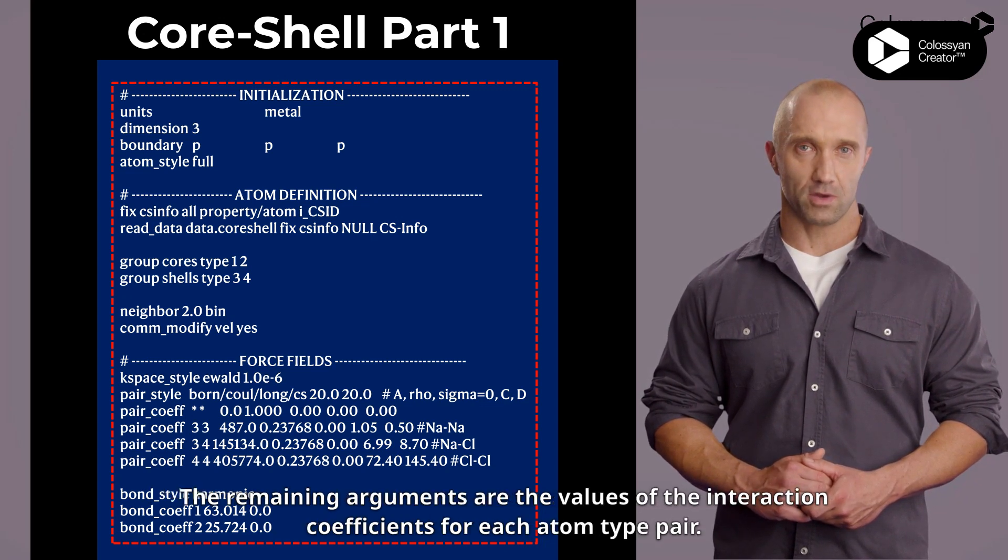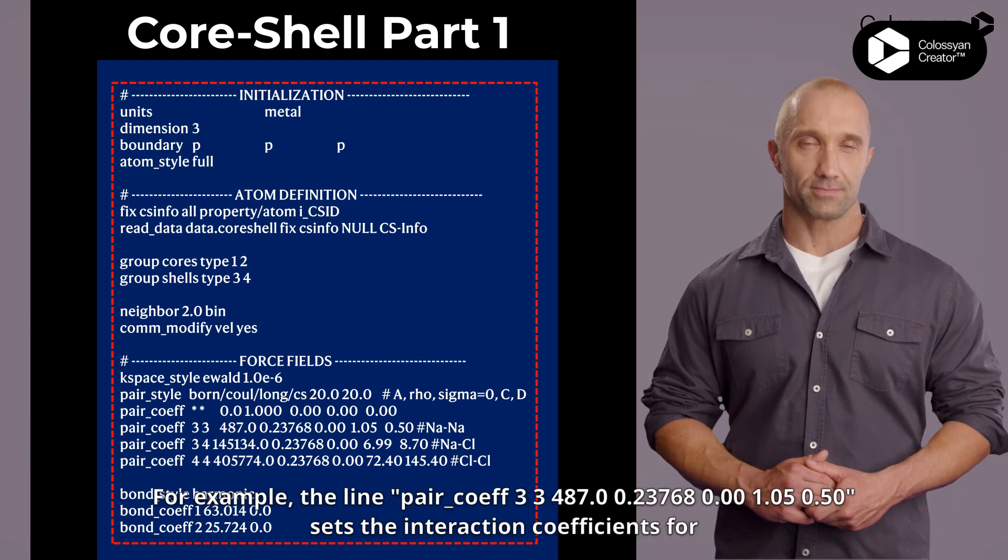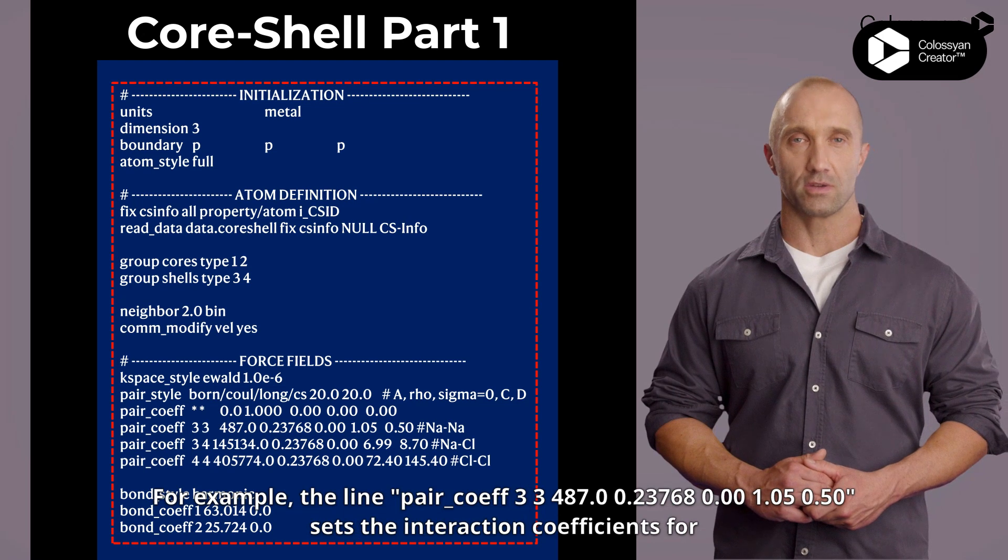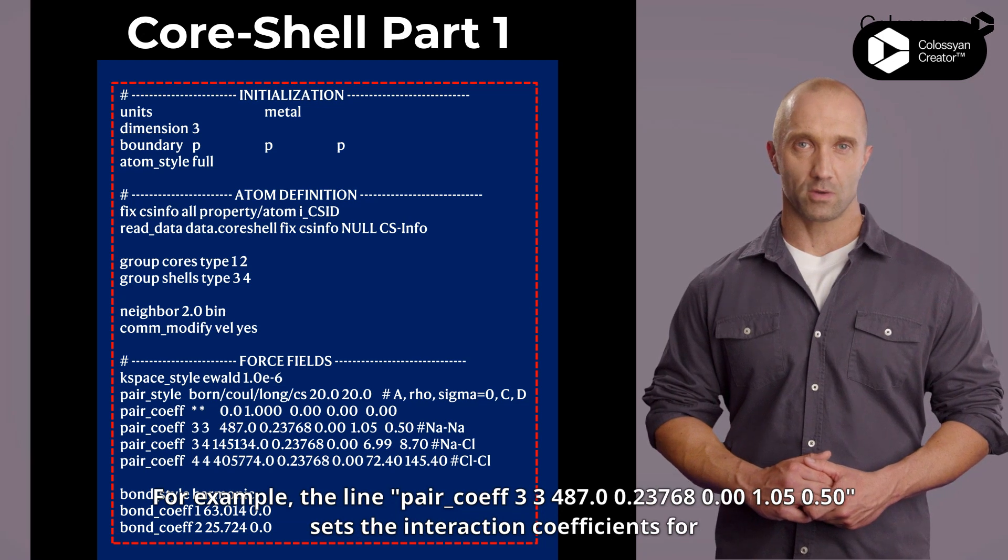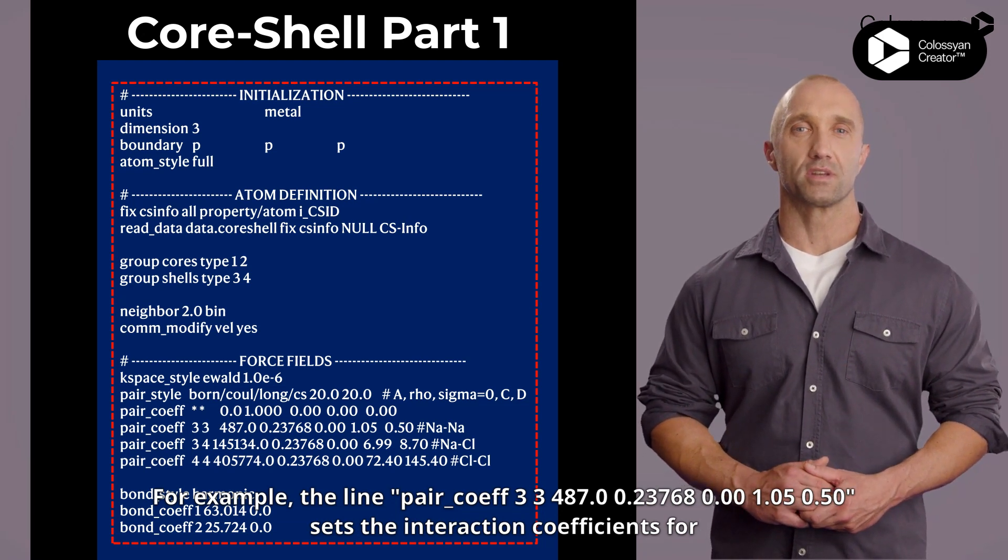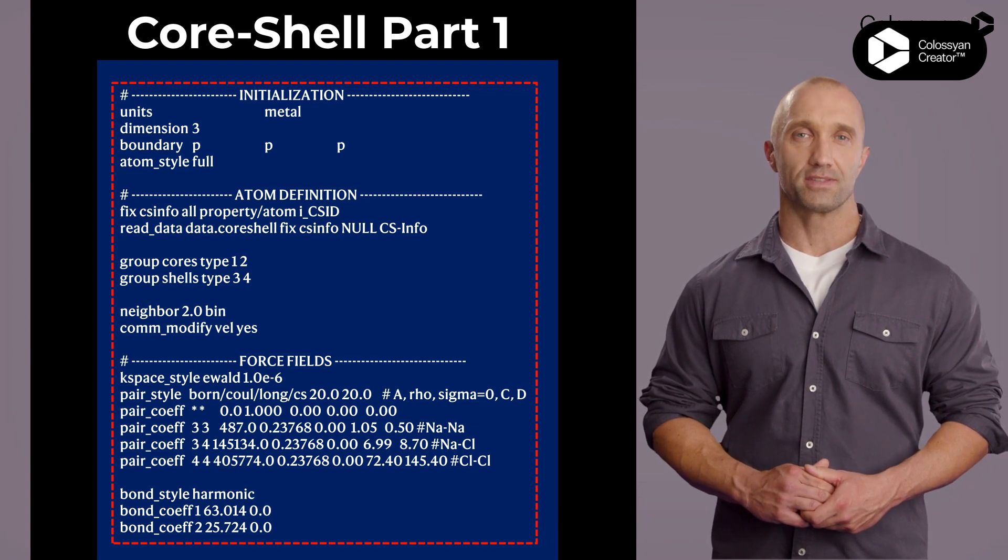The remaining arguments are the values of the interaction coefficients for each atom type pair. For example, the line pair_coef 3 3 487.0 0.23768 0.0 1.05 0.50 sets the interaction coefficients for non-interactions. The values 487...